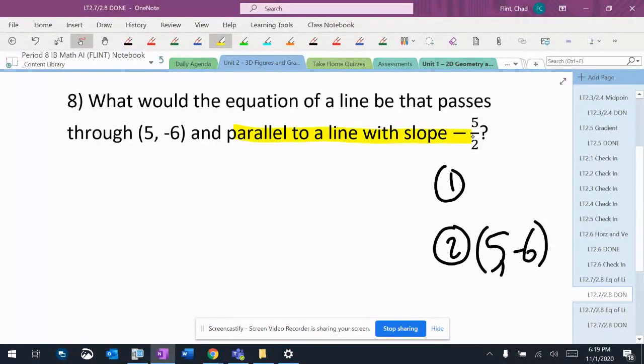And it's parallel to a line with that slope. But remember, parallel means same slope. So that means if that line's slope is negative five halves, this line's going to have a slope of negative five halves.